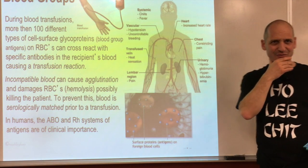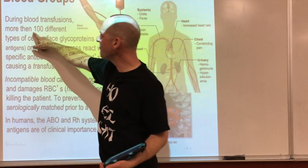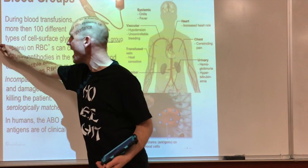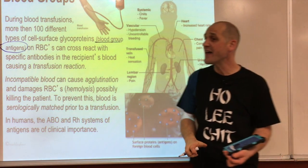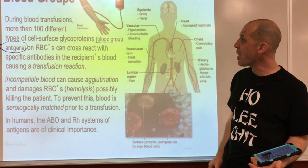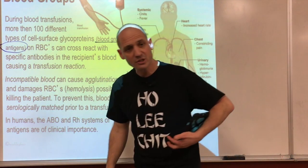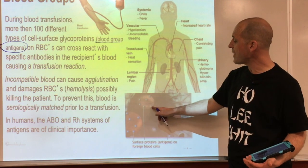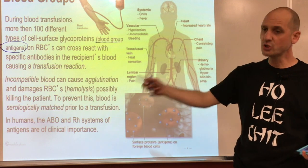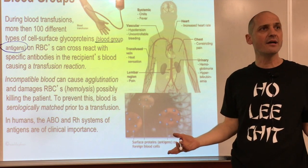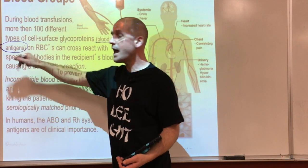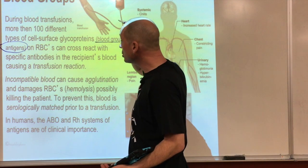Blood groups: when we transfuse blood, we have more than 100 different types of cell surface glycoproteins - blood group antigens. These are self-antigens; our body knows them. But if red blood cells with surface proteins that look like antigens to someone else's immune system are transfused, that recipient's body will react, the red blood cells will clump together, and that could kill you. Incompatible blood can agglutinate and damage RBCs - called hemolysis - possibly killing a patient.